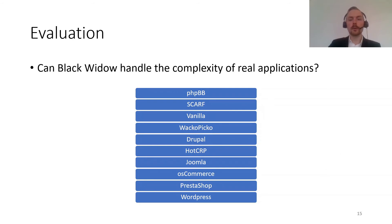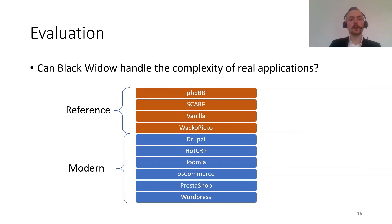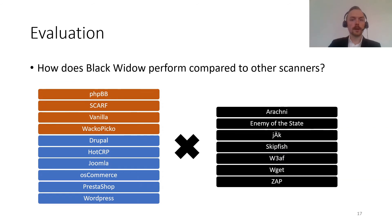We want to evaluate if Black Widow can handle the complexity of real applications. We look at both code coverage — the number of lines of code executed on the server side — as well as the number of vulnerabilities detected, across 10 different web applications. We divide these into reference applications, which run old versions with known vulnerabilities used in previous papers, and six modern applications running the latest versions, including WordPress, PrestaShop, Drupal, and HotCrab. For each application, we compare Black Widow with seven other scanners: Arachne, Enemy of the State, Jack, Skipfish, and Wget (for coverage only, not vulnerability scanning).